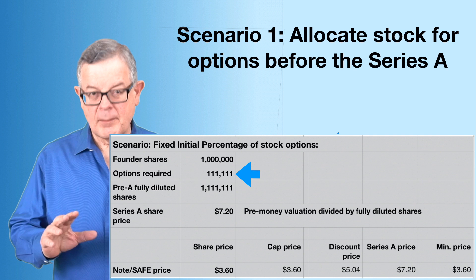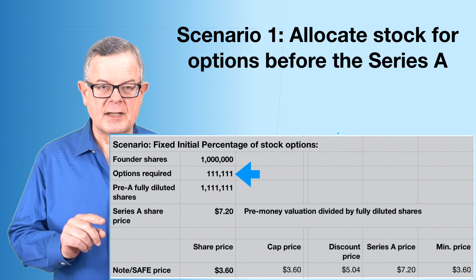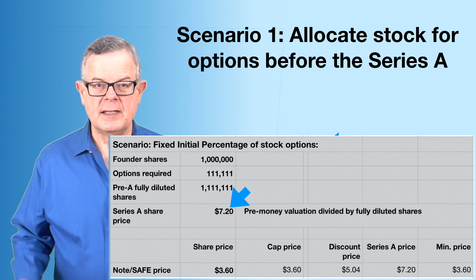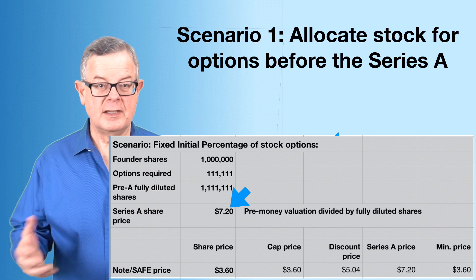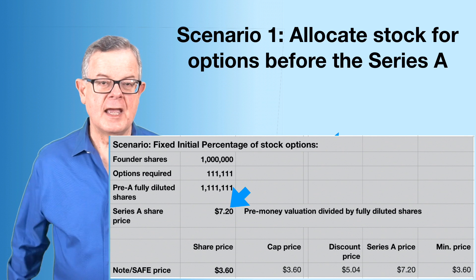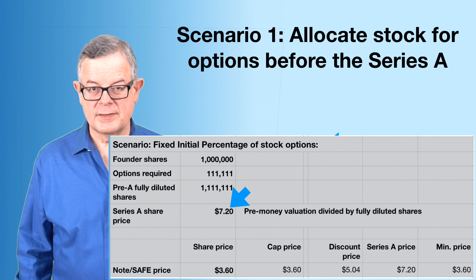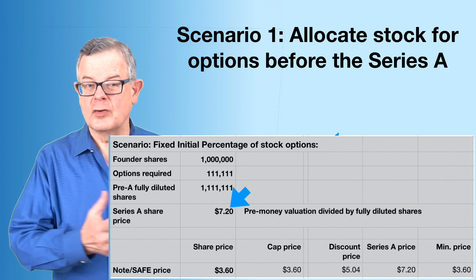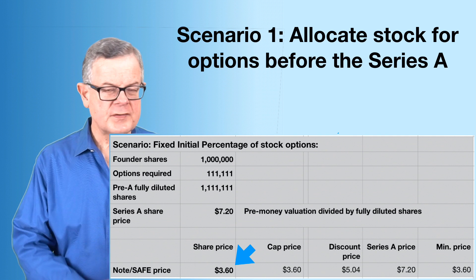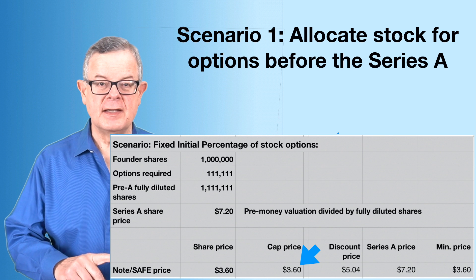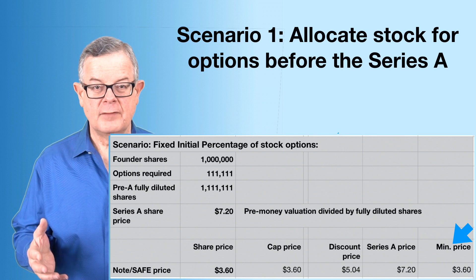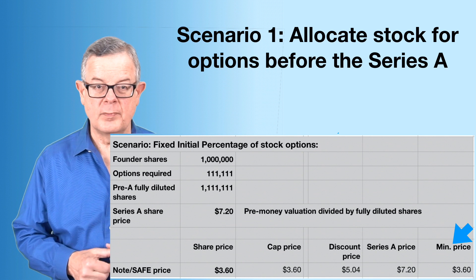Now that we've figured out the option allocation, we calculate the share price the Series A investors will pay: pre-money value divided by the fully diluted capitalization. Pre-money is eight million divided by just over 1.1 million shares, giving a price of $7.20 per share. For the convertible security holder, we calculate the price dictated by the cap, the price dictated by the discount, and the Series A price — and take the minimum. In this case, the cap gives the best deal.